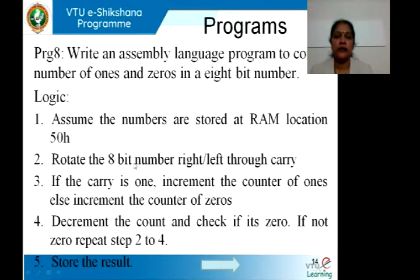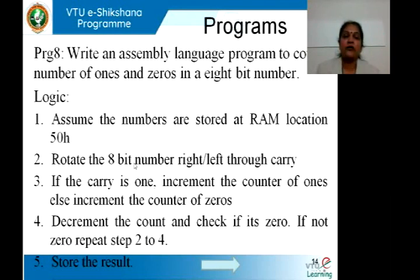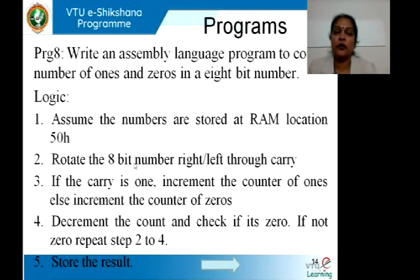Next program: write an assembly program to count the number of zeros and ones in an 8-bit number. This program is designed to help us understand logical instructions. We get a byte of data from location 58H. Note that in all these programs, the data value is not fixed in the program itself — it is stored in a RAM location. This allows us to change inputs at runtime to test different combinations.